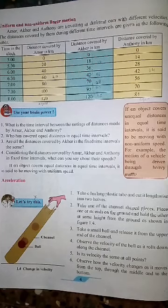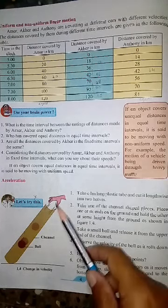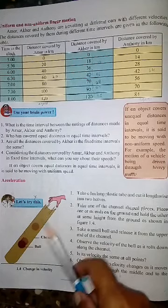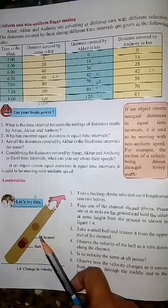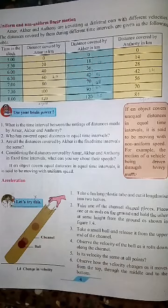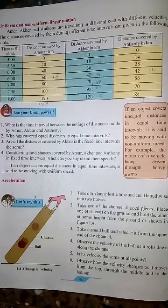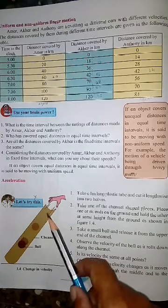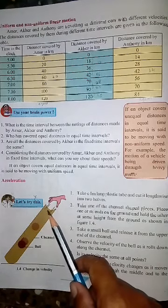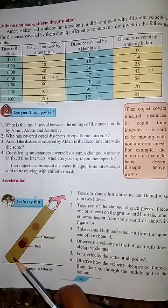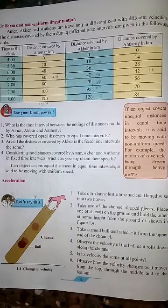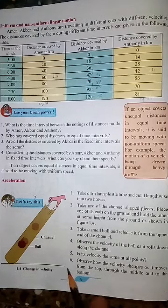Place one of its ends on the ground and hold the other end at the same height from the ground, as shown in the figure. You have to keep or place that channel shape. Take a small ball and release it from the upper end of the channel. Observe the velocity of the ball as it rolls down along the channel — is its velocity the same at all points?